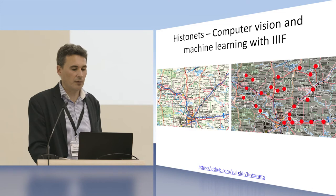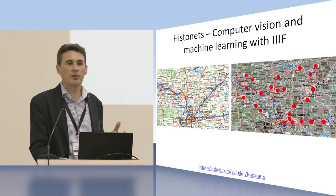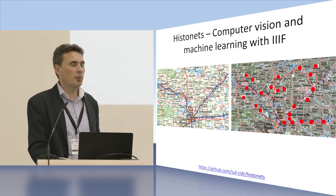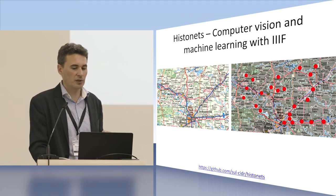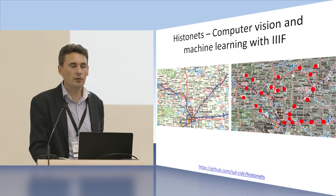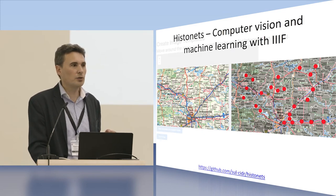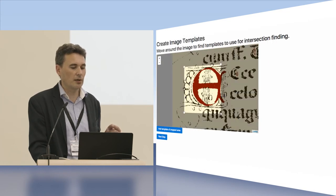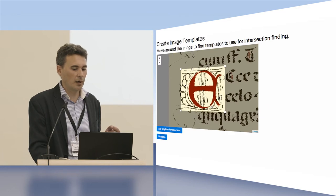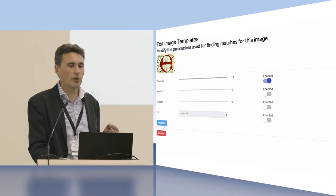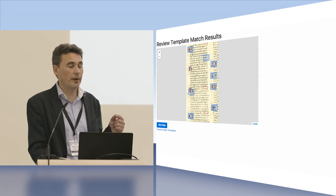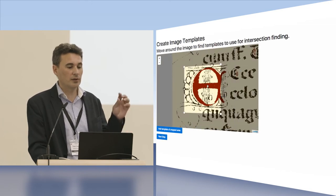Some early work at Stanford focused on extracting road networks and looking at their growth over time. We built a computer vision pipeline to identify road networks over a series of years using road atlases for the same networks in the United States. We found this core technology was not only useful for road networks but for feature extraction from other types of items — for example, identifying an initial from a medieval manuscript folio and doing on-the-fly parameter setting to let the machine learning model know how similar items should look.